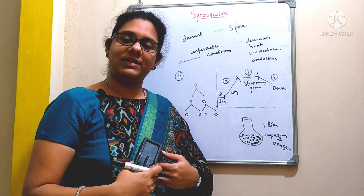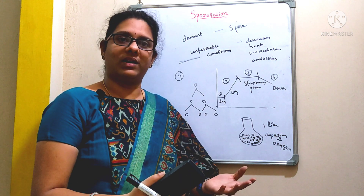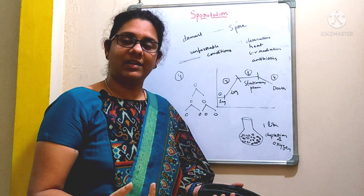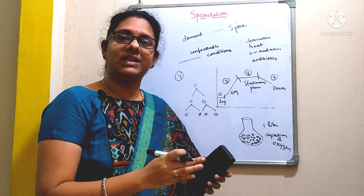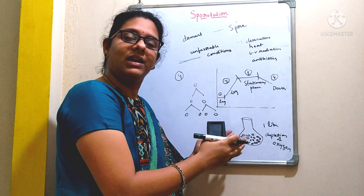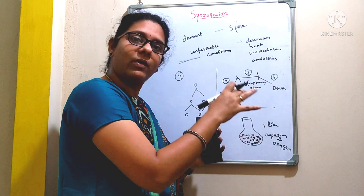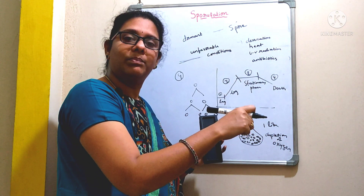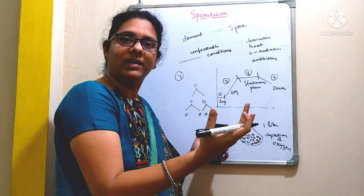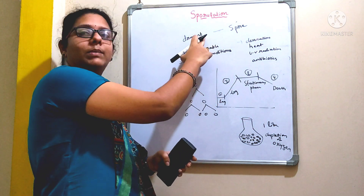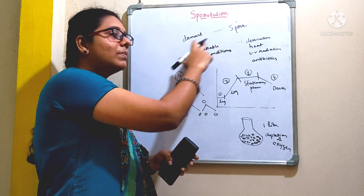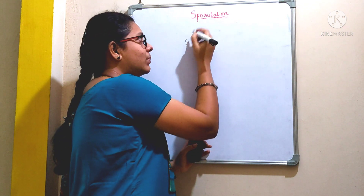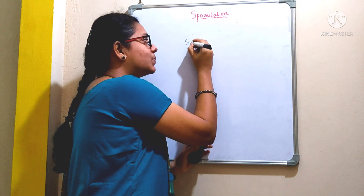Taking a human analogy: if I am healthy, I can do work. But if I don't have food, I will become weak. Similarly, when bacteria are provided with sufficient nutrients, they will grow well. But when these nutrients are depleted, they can't grow well. That is the reason the bacteria will undergo formation of a dormant structure called spore.